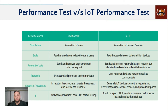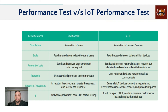IoT uses more non-standard protocols for communication, which we'll look at in later slides. For request and response, traditional performance testing follows a simple request-receive-response cycle. But in IoT, a device can create a request, receive a response, and also provide additional responses — it processes information and communicates it back to connected devices.